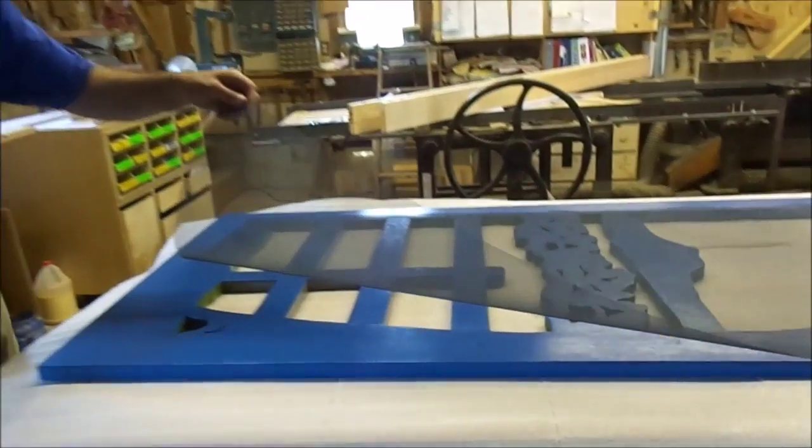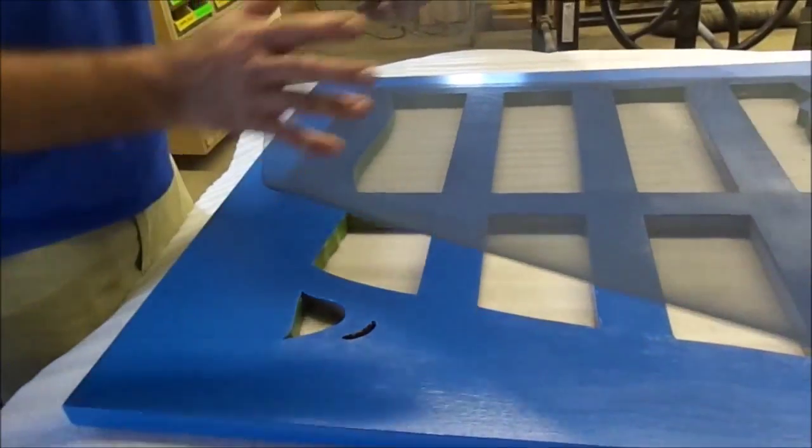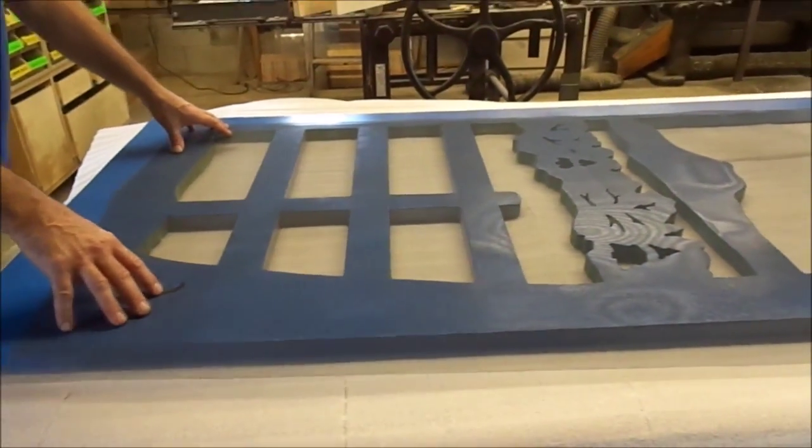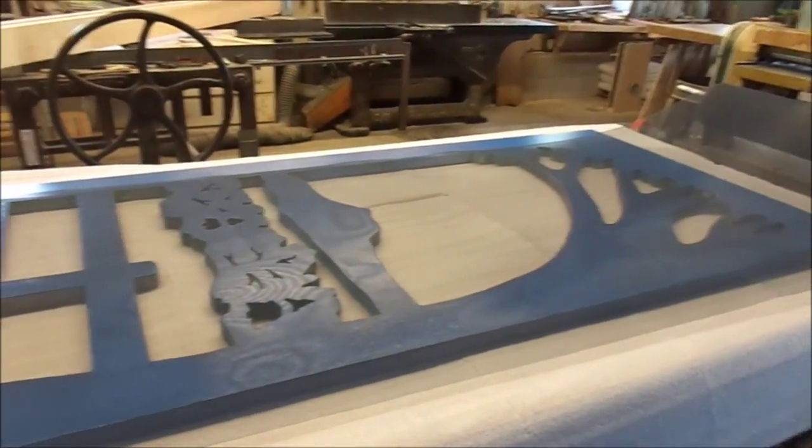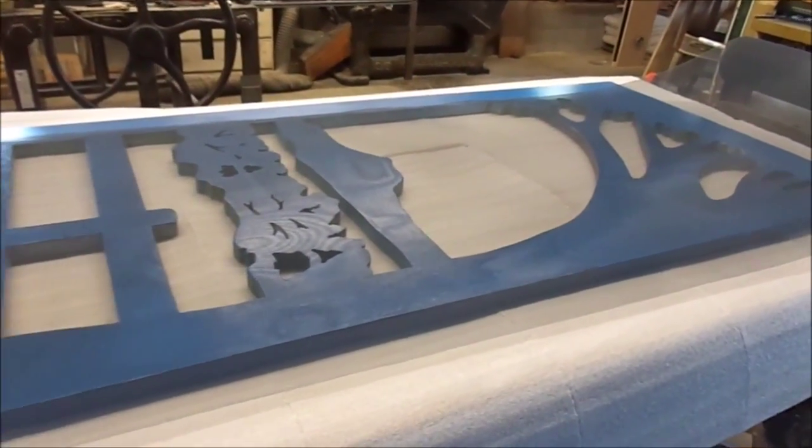This is one of my doors here and I've got it face down. I always put the screen on the inside of the door. And when I have a tree in my design, the trunk of the tree is always the hinged side.